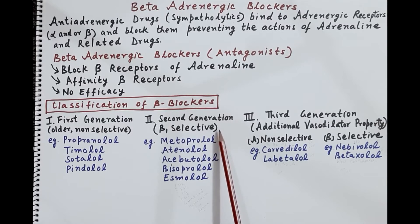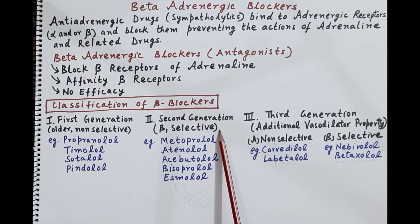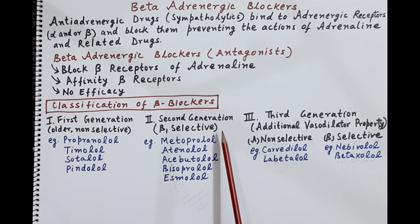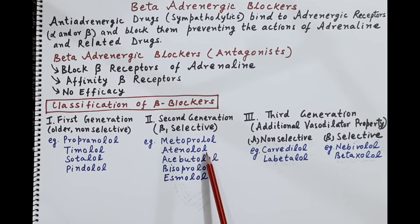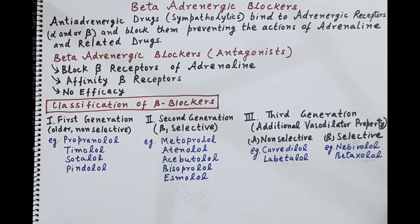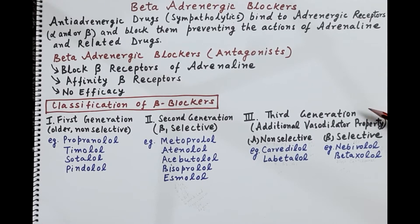Second generation beta blockers are those drugs that selectively block beta 1 receptors. By blocking beta 1 receptors they produce a fall in heart rate, a fall in the force of contraction of cardiac muscles, and a reduction in cardiac output and workload. Therefore these drugs are used in the treatment of hypertension, congestive heart failure, and cardiac diseases like angina. Examples are metoprolol, atenolol, acebutolol, bisoprolol, and esmolol.